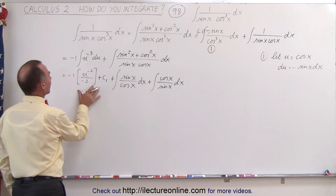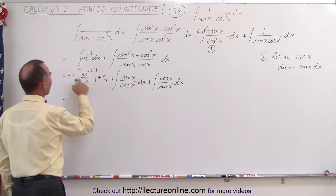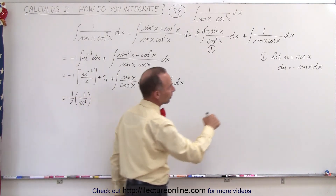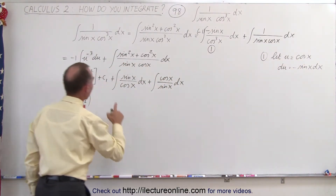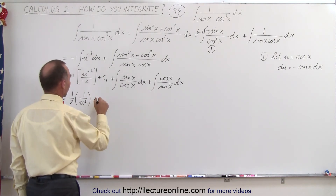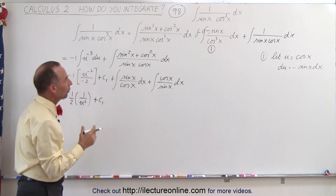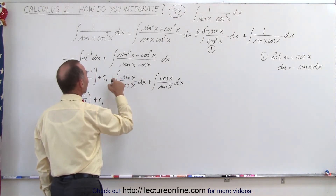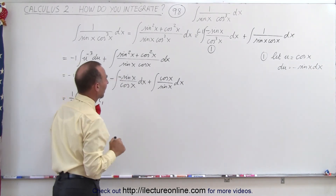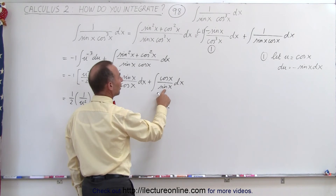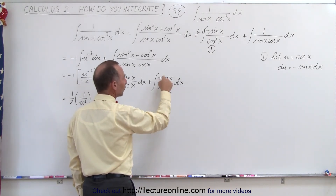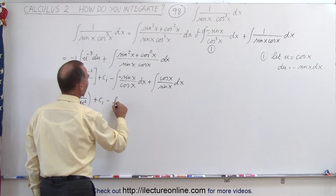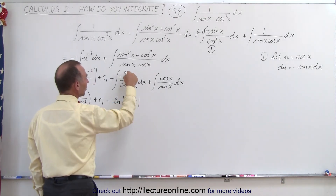This simplifies as follows: the negatives cancel out, so we have 1 over 2 times 1 over u squared, where u for the first integral was cosine of x, plus c1. For the sine over cosine integral, if we let u equal cosine of x then du is negative sine of x, so we need a negative in front. For the cosine over sine integral, if we let u equal sine of x then du is cosine of x. Integrating gives minus the natural log of cosine of x, because that is du over u, plus the natural log of sine of x, plus a second constant of integration.